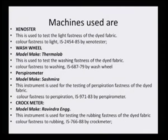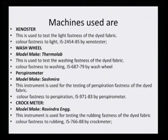Let us understand the fastness property assessment on dyed fabrics by looking at the various fastness property machines — how they are designed, how they work, what they assess, and how the result is interpreted. The machine used is the Xenoster, which tests the light fastness of dyed fabric. The color fastness to light by Indian standard IS 2454 was first introduced in 1985 for this purpose.